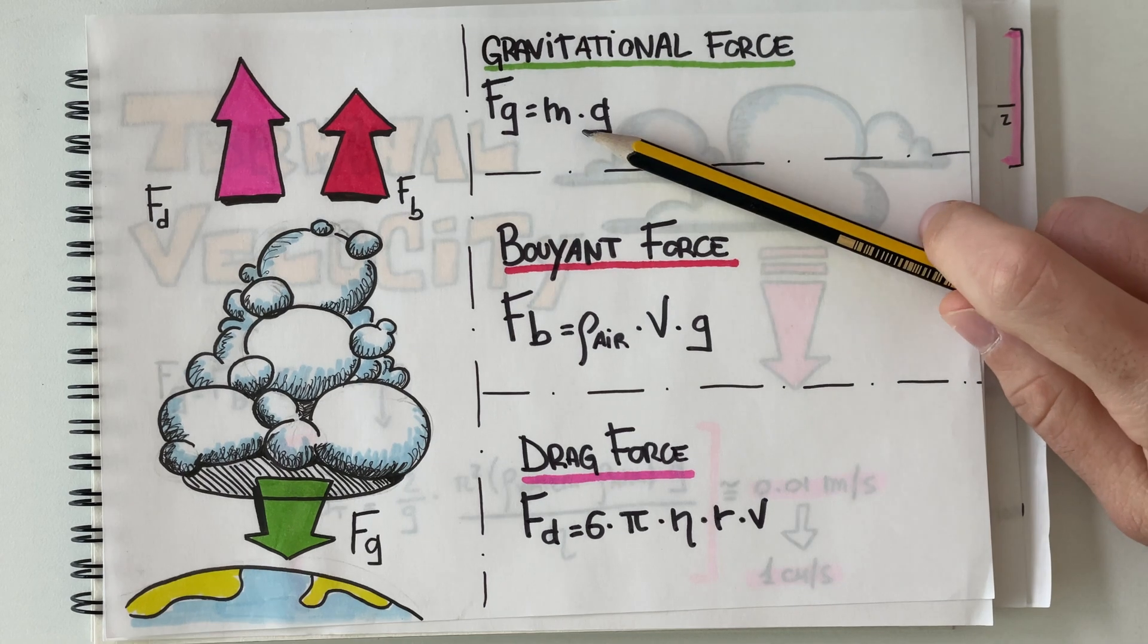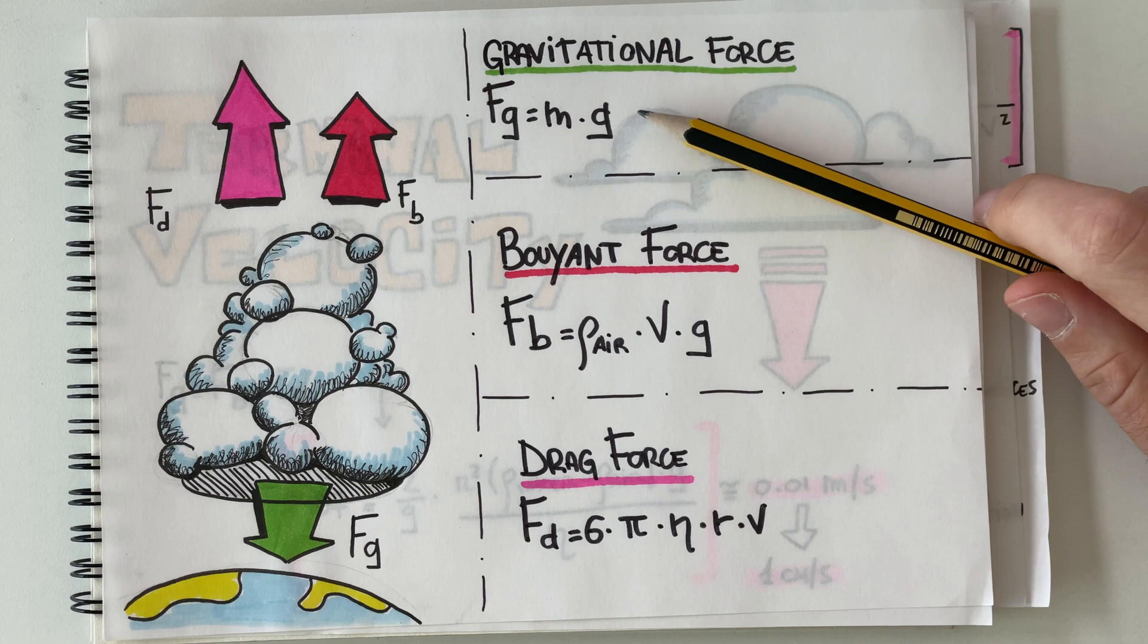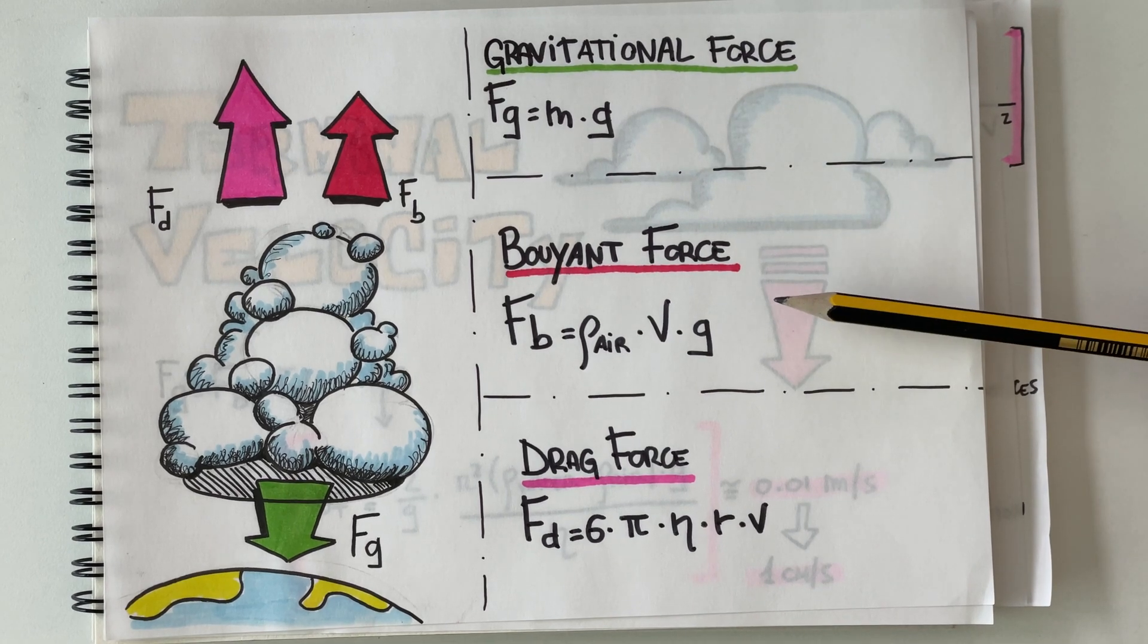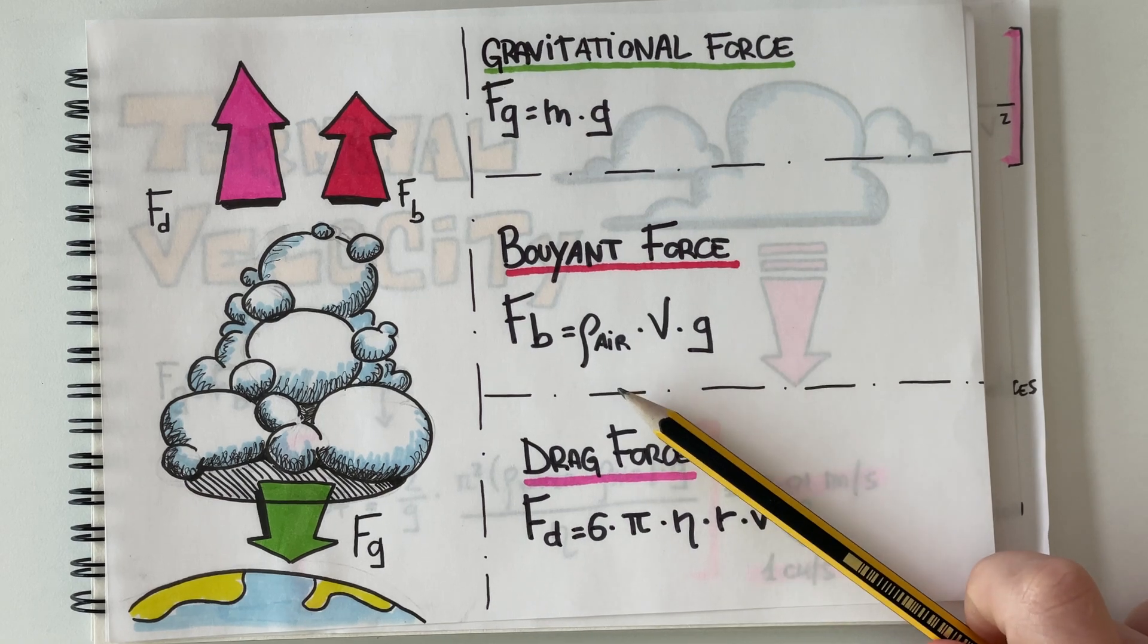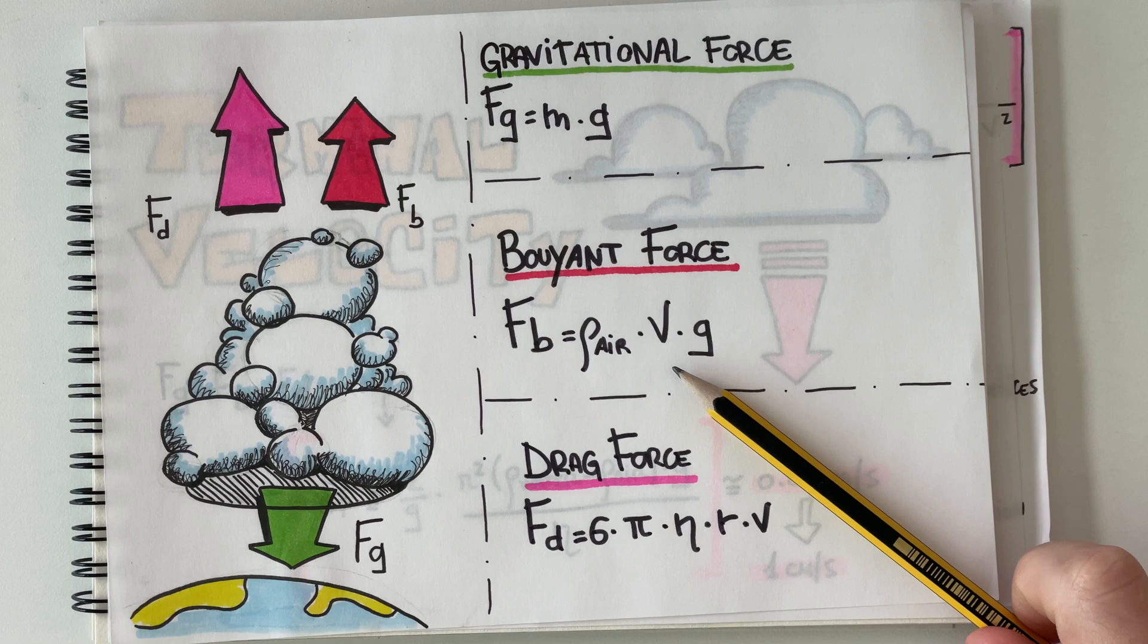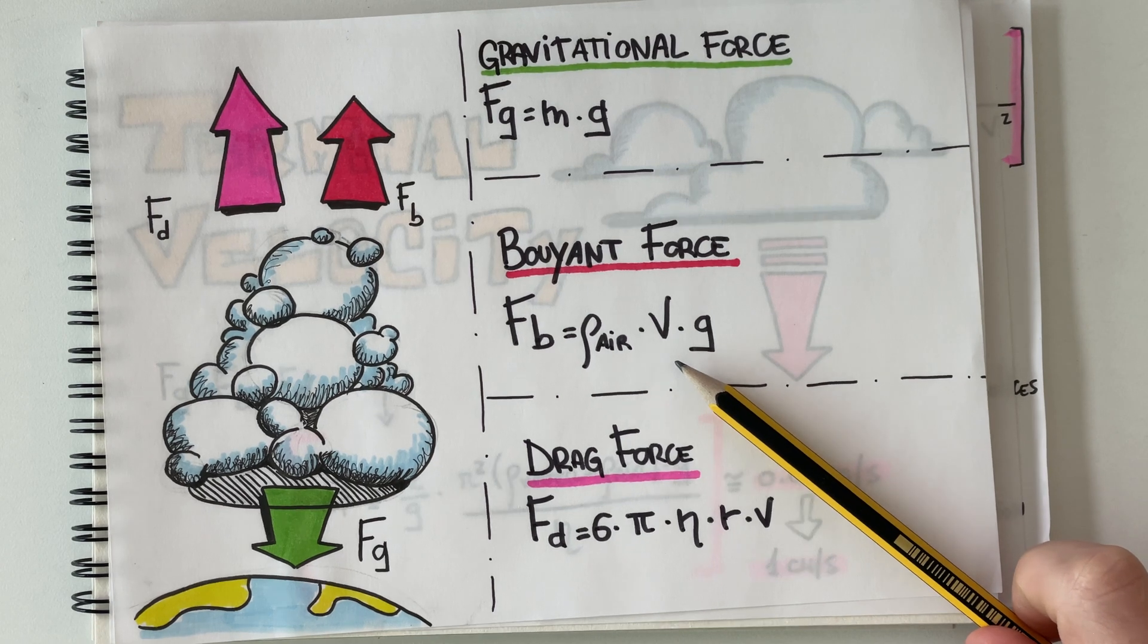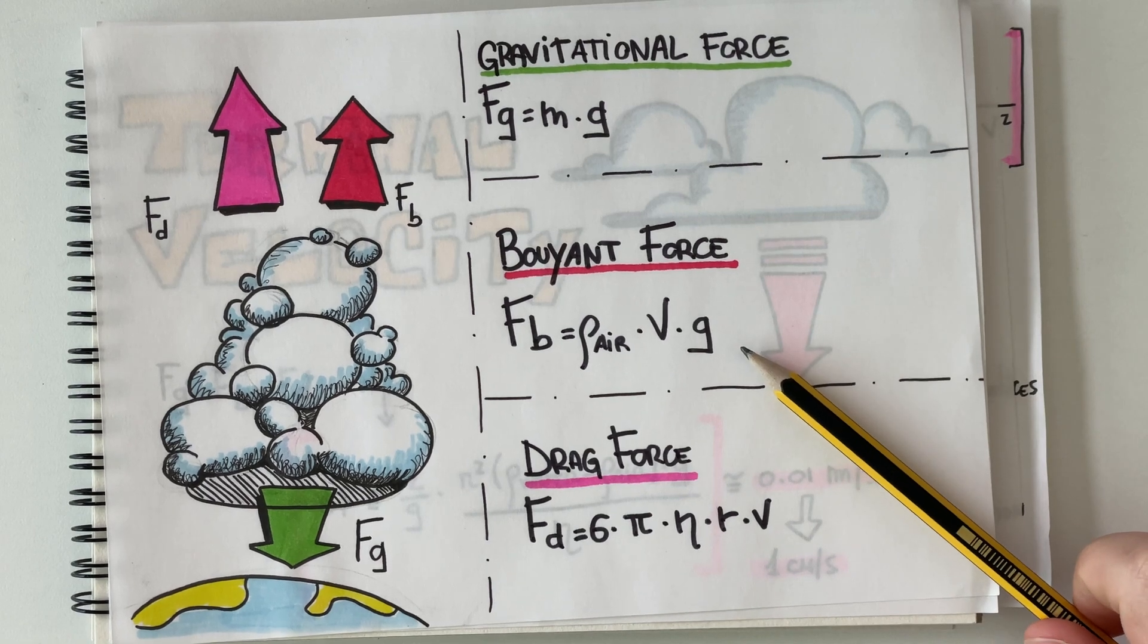So we have the mass of the cloud multiplied by the gravity. Second, we have the buoyant force where the equation is telling us that we have to multiply the density of the air times its volume, so the volume of the object itself, and again the gravity.